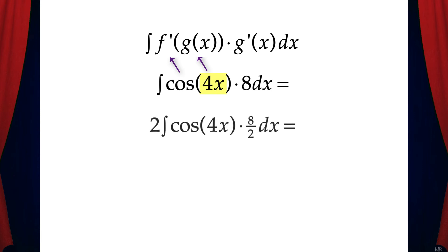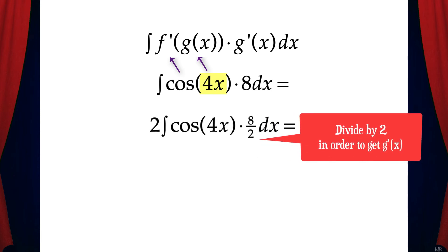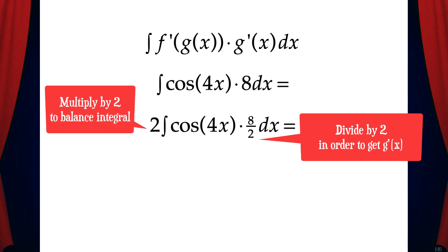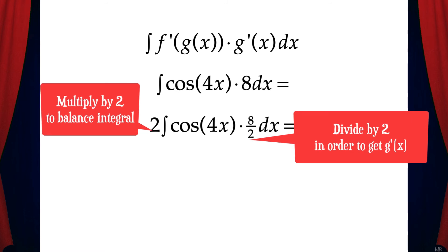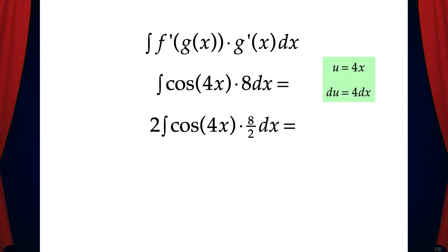So what we need to do is divide the 8 by 2. But if we divide the 8 by 2, we also need to multiply the entire integral by 2 to balance the equation. So now we have u equals 4x and du equals 4 dx.